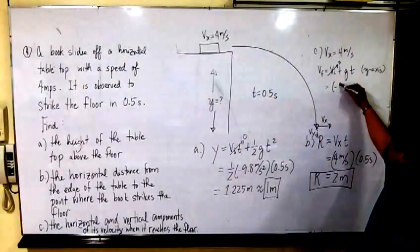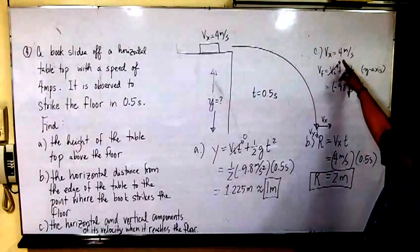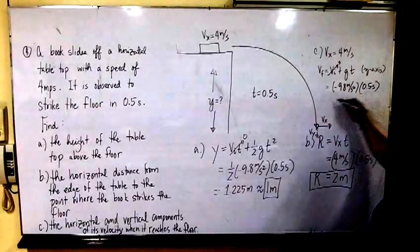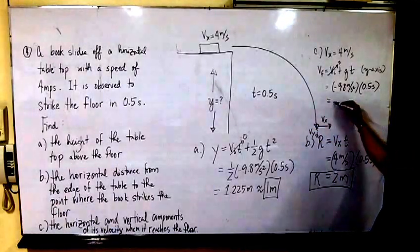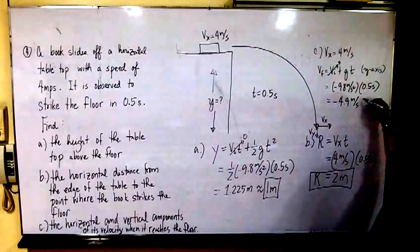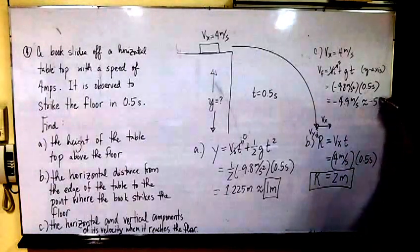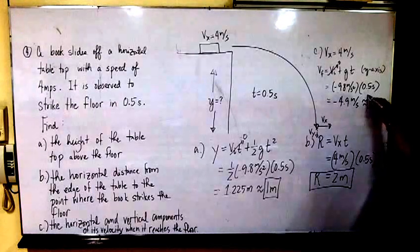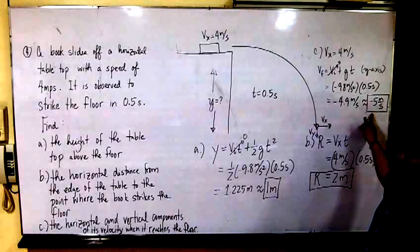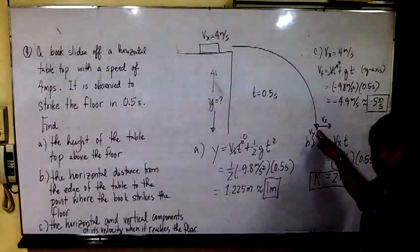So G is negative 9.8 meters per second squared, and the time of flight is 0.5 seconds. Multiplying these two, you will get negative 4.9 meters per second. Rounding off, you have negative 5 meters per second. This now is the vertical component of speed once the book reaches the floor.